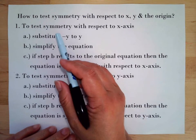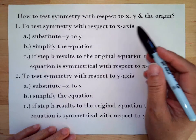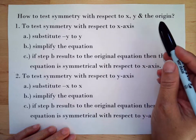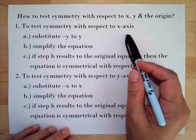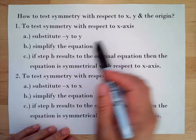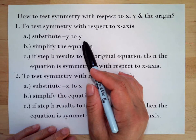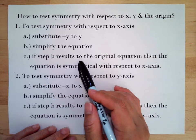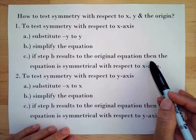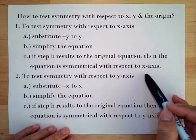To test symmetry with respect to the x-axis, substitute negative y for y, then simplify the equation. If the result equals the original equation, then the equation is symmetrical with respect to the x-axis. Let's try our example.